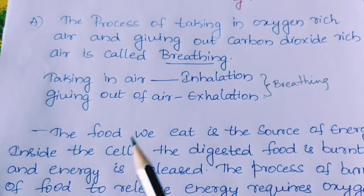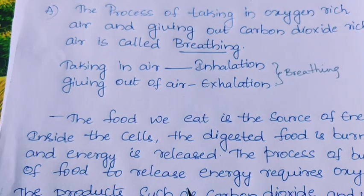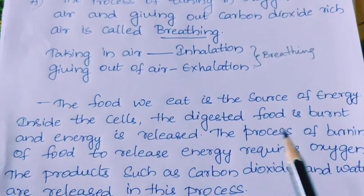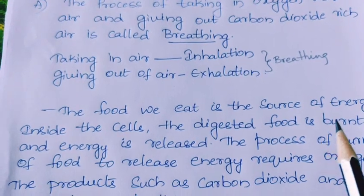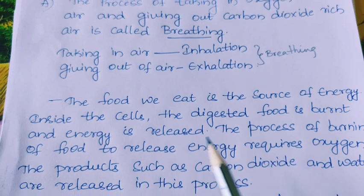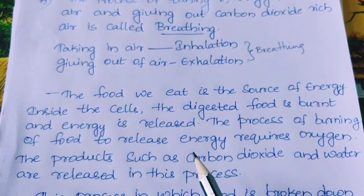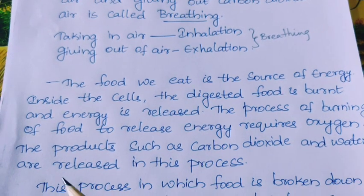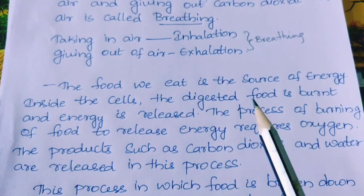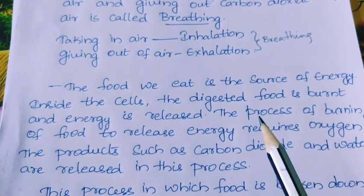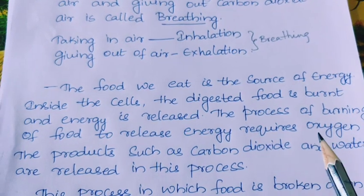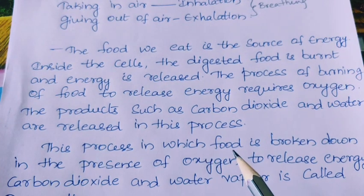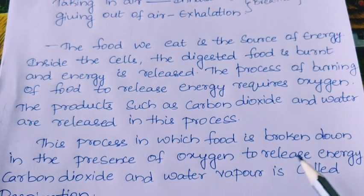The food we eat is the source of energy. Inside the cells, the digested food is burnt — that is, oxidized or broken down — and energy is released. This process of burning food to release energy requires oxygen, and products such as carbon dioxide and water are released. Food is broken down into smaller molecules in the presence of oxygen, releasing carbon dioxide and water.